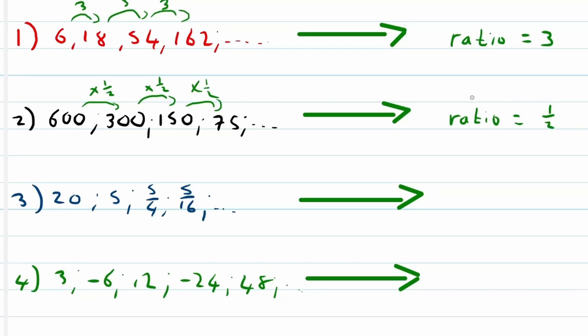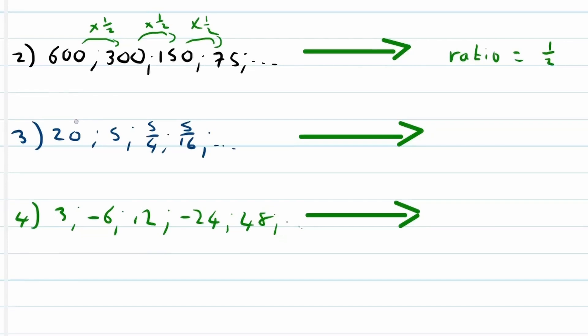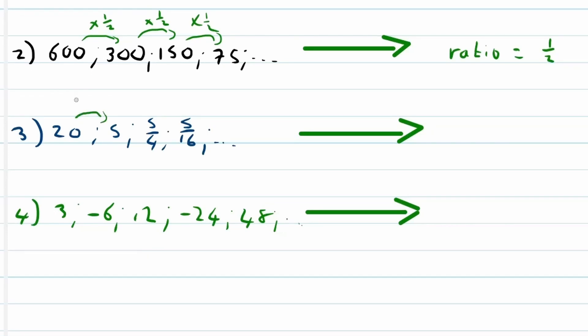So let's look at the following example, example 3. Now over here we've got 20 to 5. Now understand, as I've mentioned, we are actually dividing by 4 to go to 5.